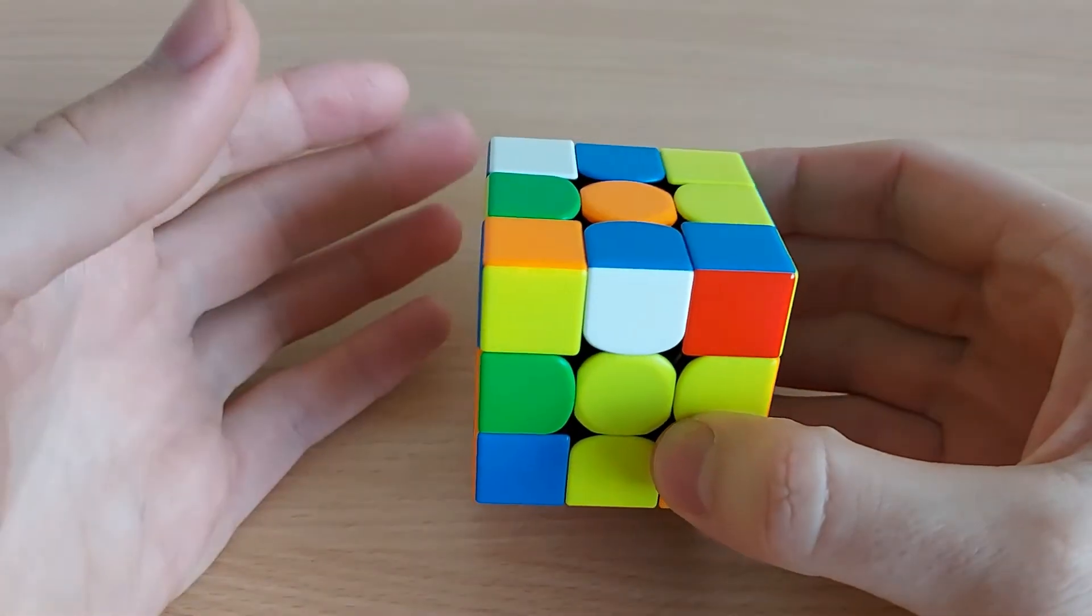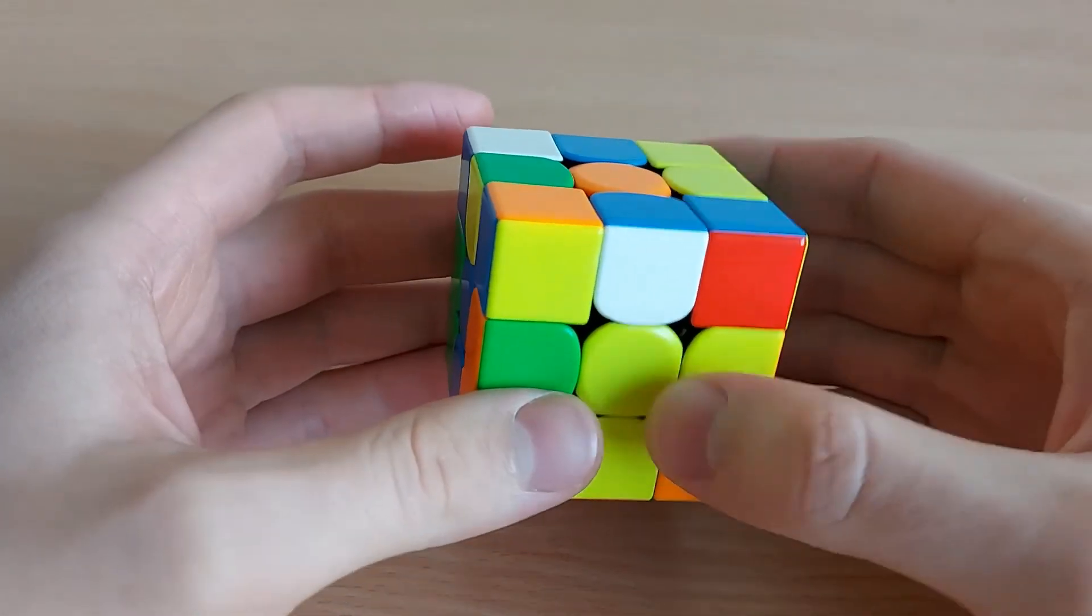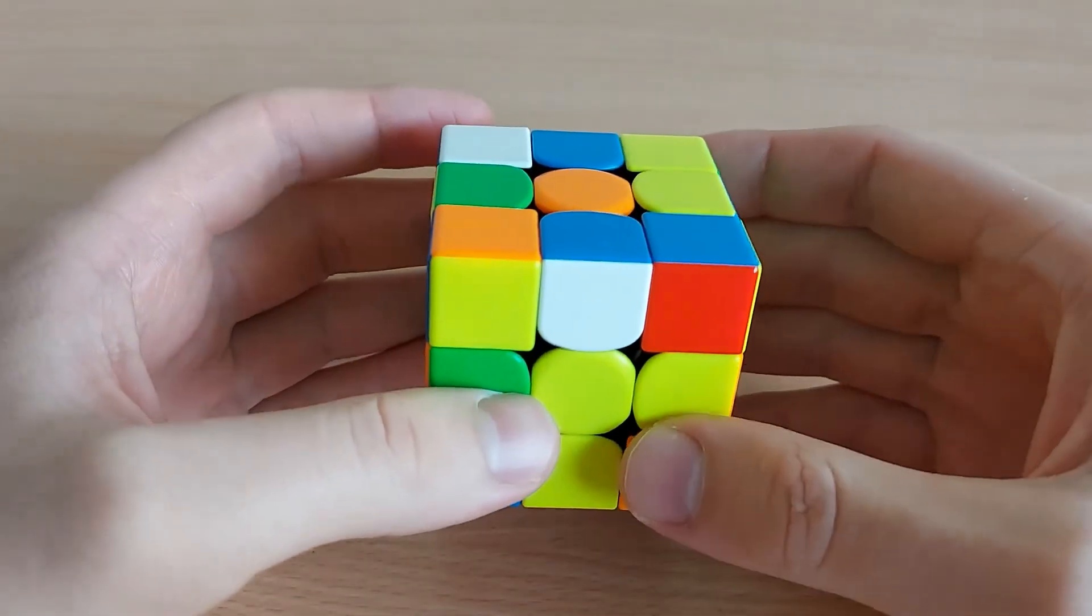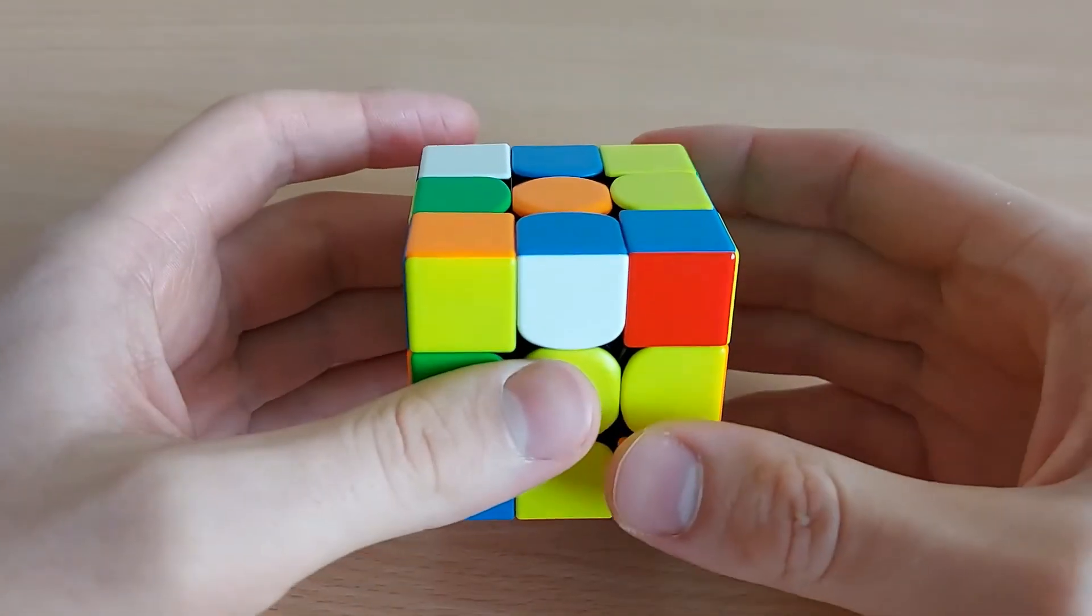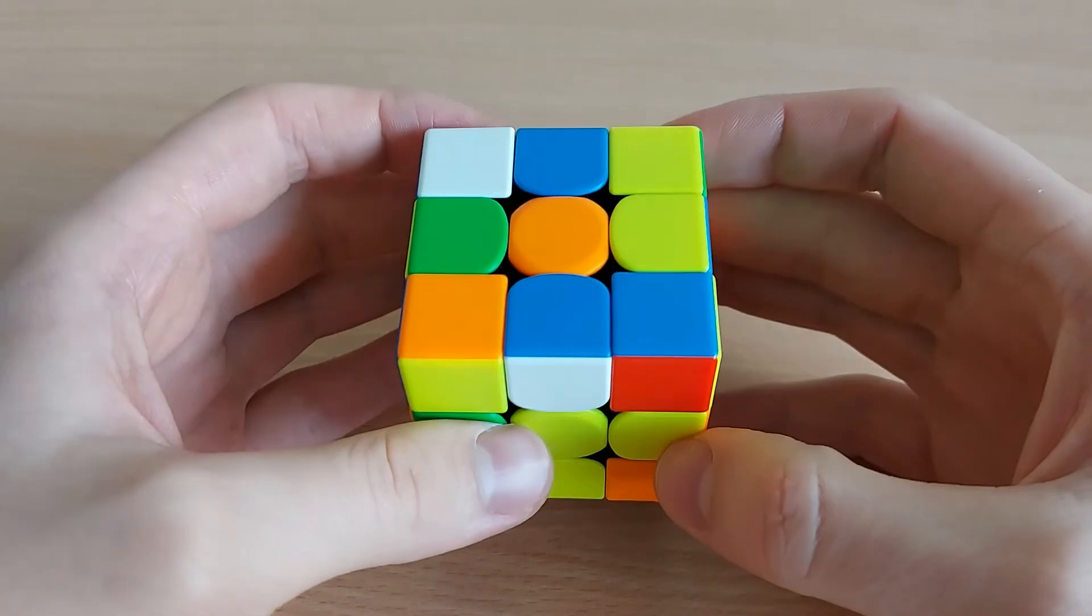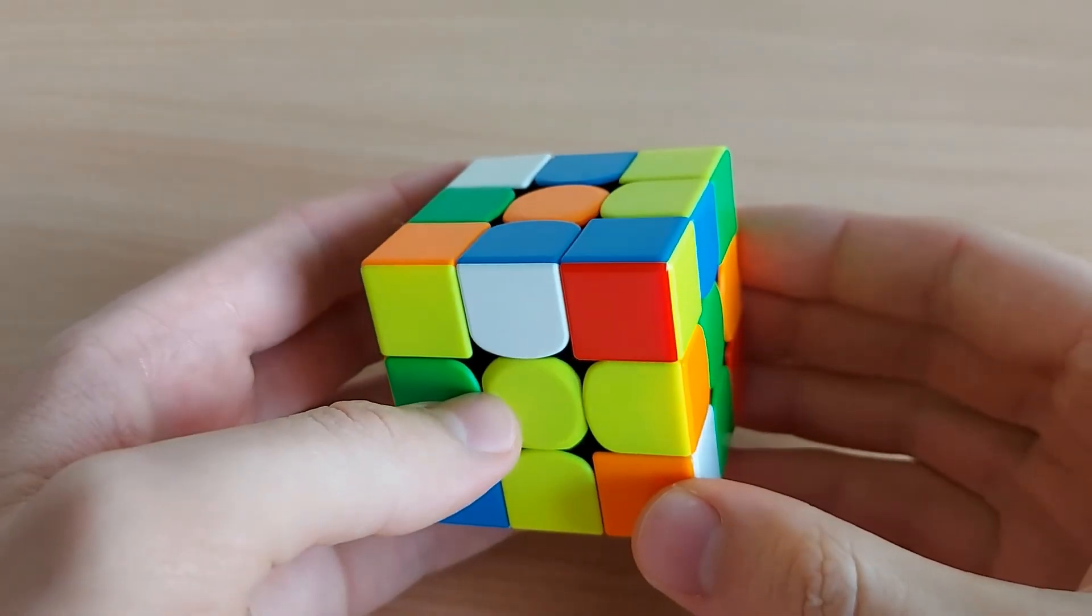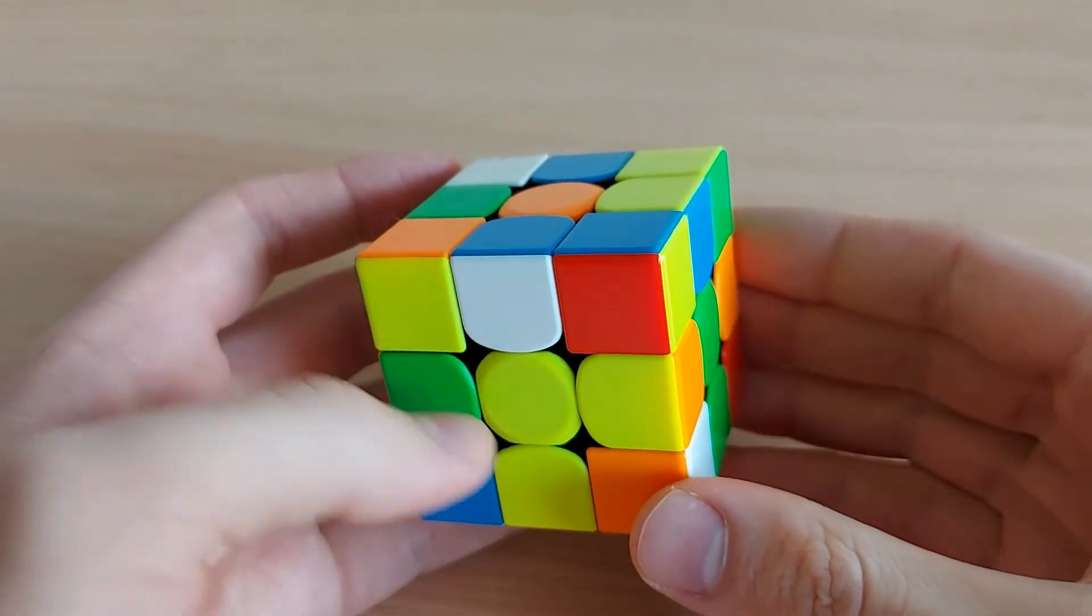I am color neutral since I started cubing because I never used that idea that you should always solve white cross. So I think that is very beneficial to get rid of this bad habit because you can miss a very easy cross solution.